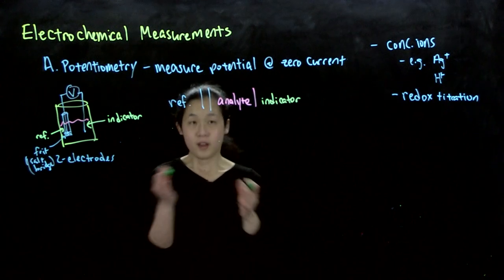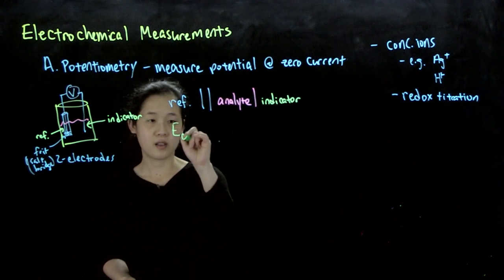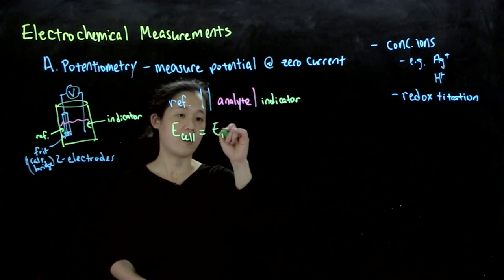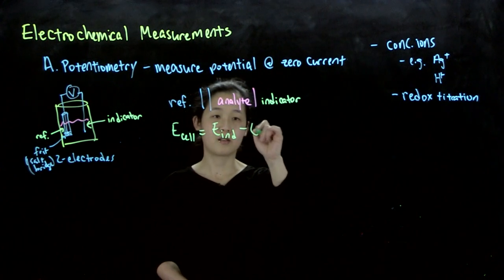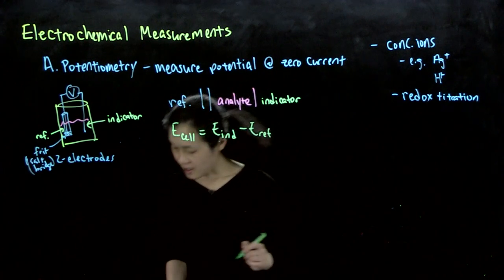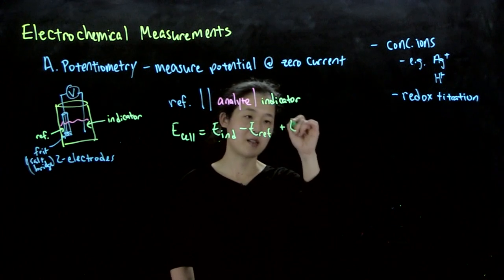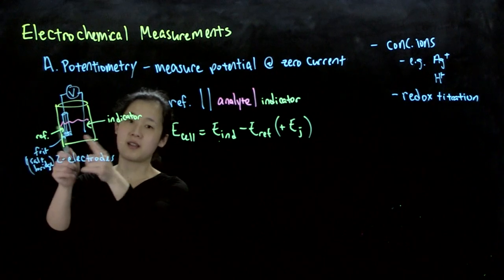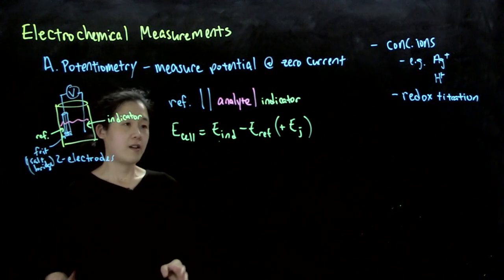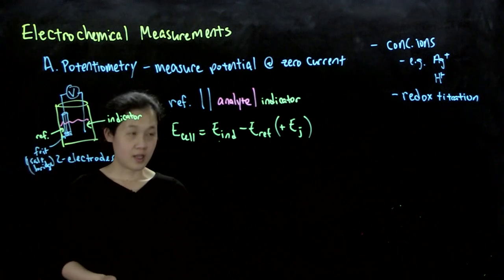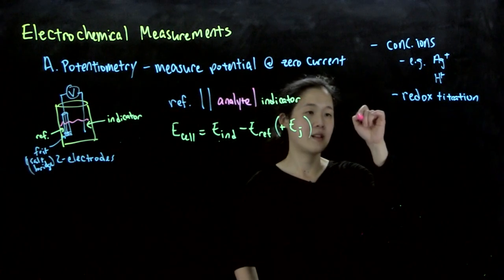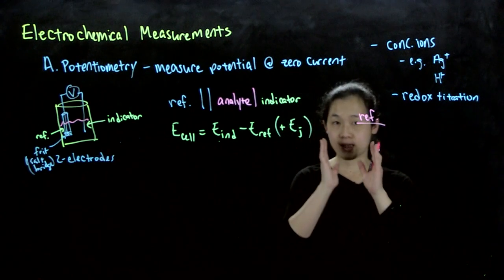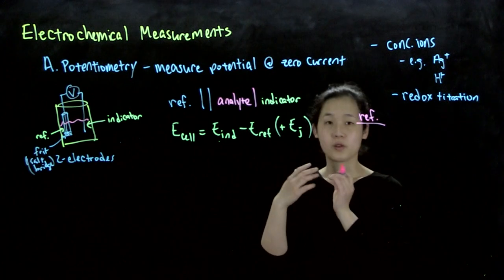So the cell potential, when we measure E cell, is therefore going to be the potential of our indicator minus the potential of our reference. And then I'm also going to add, sometimes you add what's called the junction potential, but we'll ignore that for now. So that's an extra potential drop across the distance of your solution. So the way this works, so this reference electrode is going to be, so reference electrodes, these are what we just measure against.